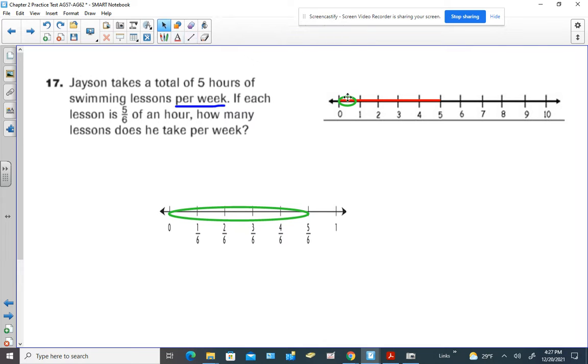So basically what we're trying to figure out is how many of these do we have in the red line. So that means we're breaking up five into equal groups of five-sixths, which means that five is the dividend, because that's the thing we're breaking up. And five-sixths would be the divisor.